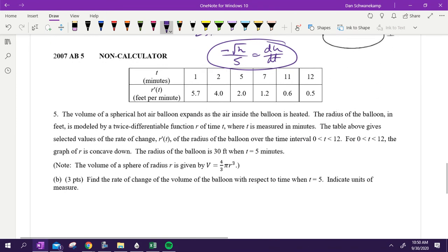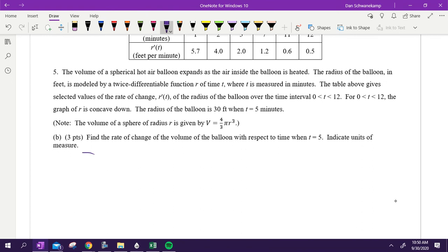One more. The volume of a spherical hot air balloon. So we got a hot air balloon. Yeah, that's a sphere. The hot air balloon expands. So it's getting bigger as we go. The radius of the balloon is modeled by a twice-differentiable function of R. The table gives you R prime. The graph is concave down. That doesn't matter to us. And the radius of the balloon is 30 feet when T equals 5. Find the rate of change of the volume of the balloon with respect to time. Indicate units of measure. Read it. Label it. See what you can do with your neighbor. Go.